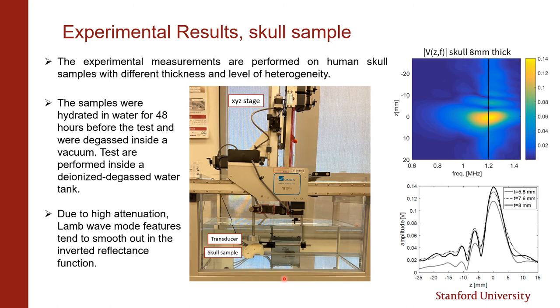Finally, the experimental measurements are performed on human skull samples with different thicknesses. The V(z,f) as an example for 8 mm skull sample is shown here, and the line scan of V(z) at 1.2 MHz for samples with different thicknesses are shown here, presenting the unique feature for each sample that represents different modes of Lamb waves generated in the samples. However, due to the high level of attenuation, this feature tends to smooth out in the inverted reflectance function of the skull compared to the plastic samples, and suggests us to operate the system at lower frequency.